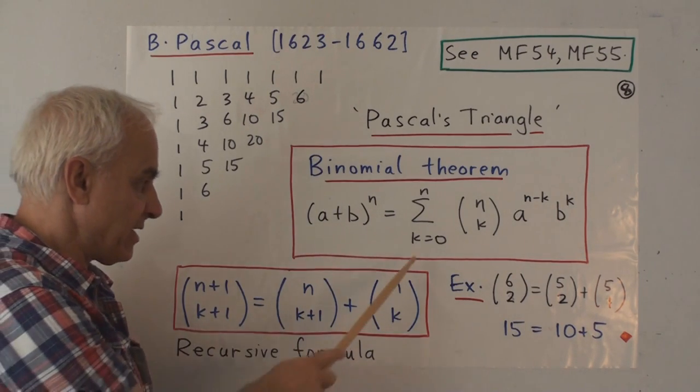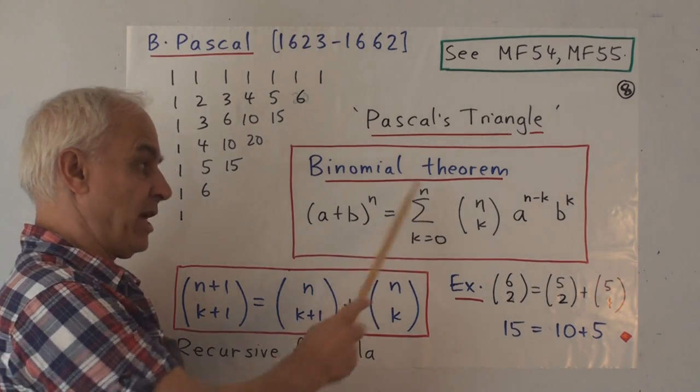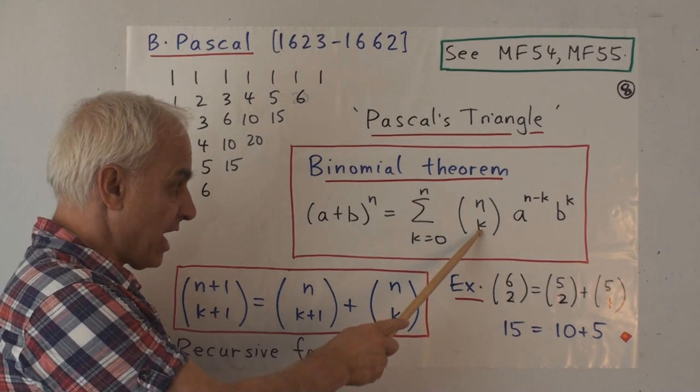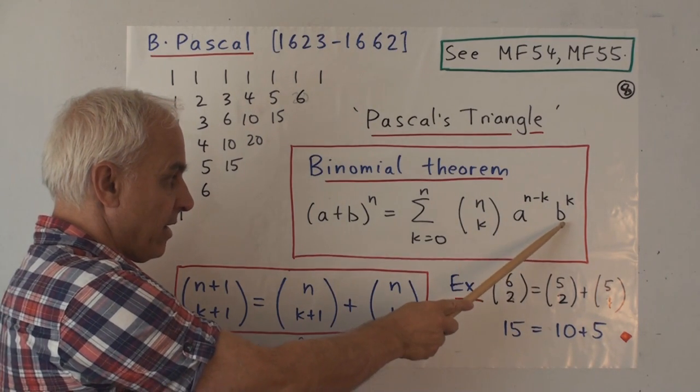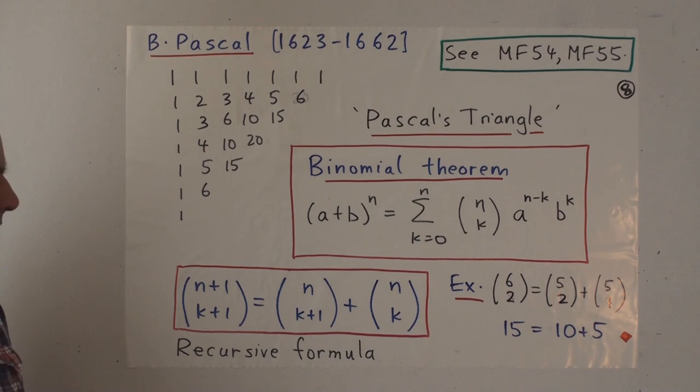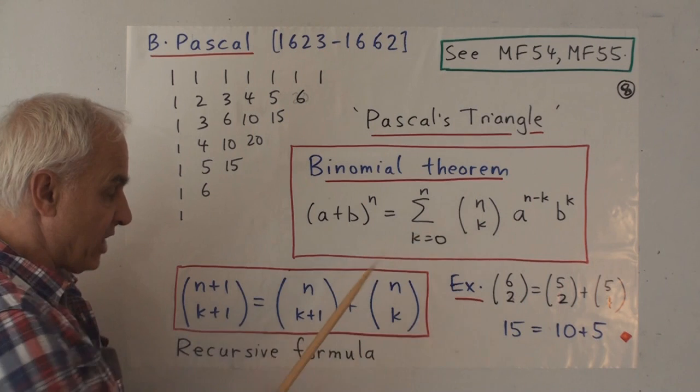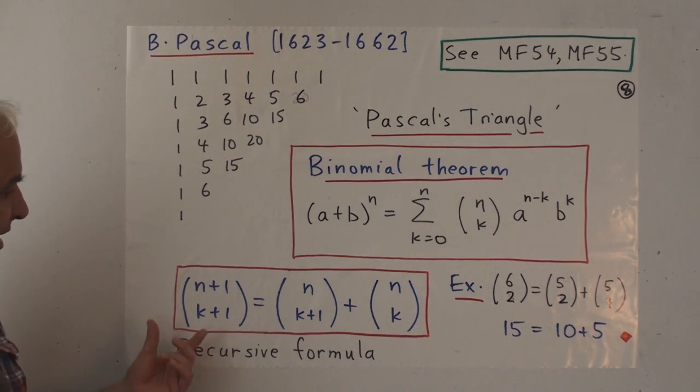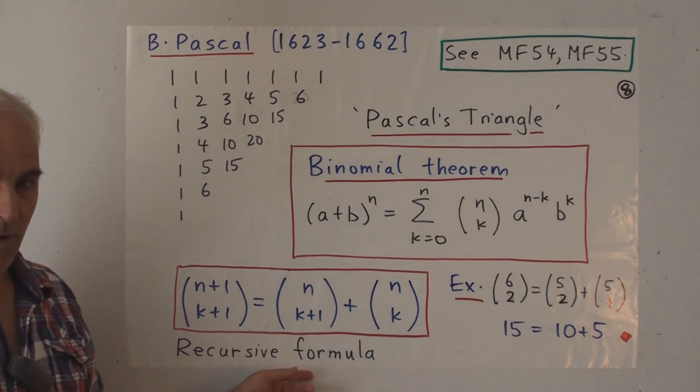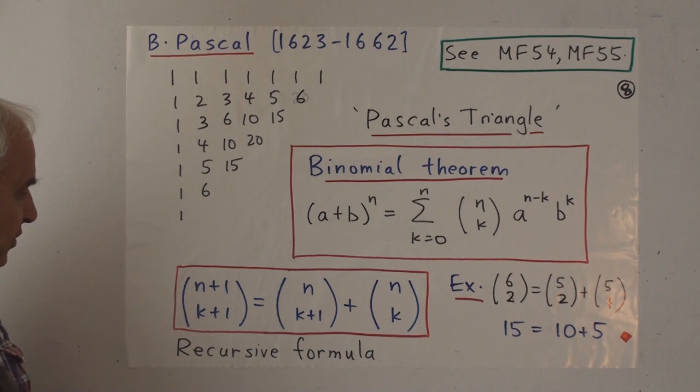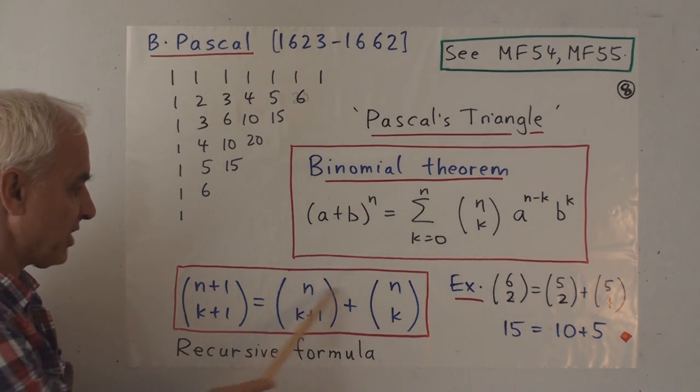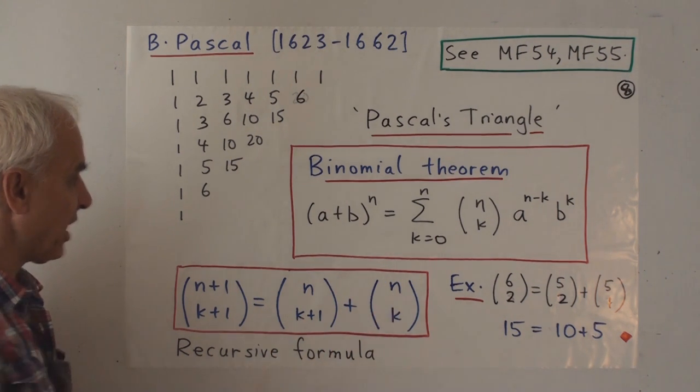a plus b to the n is the sum from k equals zero to n, n choose k, a to the n minus k, b to the k. And an important aspect of these binomial coefficients, these n choose k's, is this recursive formula for them that allows you to calculate n plus one choose k plus one in terms of two binomial coefficients with a smaller n. n choose k plus one and n choose k.